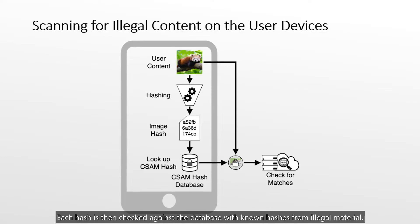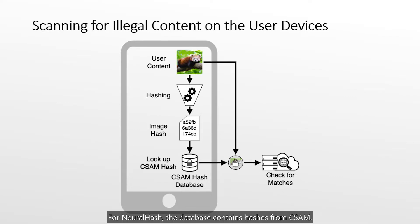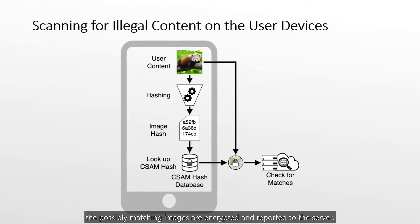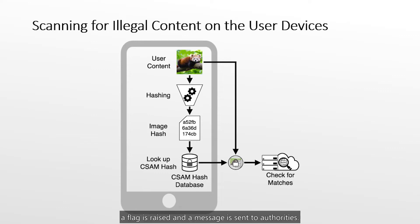Each hash is then checked against a database with known hashes from illegal material. In NeuralHash, the database contains hashes from CSAM. Usually, the content of the database is encrypted, so the hashes are not publicly available. After checking each hash for a match, the possibly matching images are encrypted and reported to the server. If the number of matches exceeds a predefined threshold, a flag is raised and a message is sent to peer authorities.